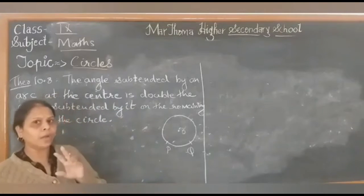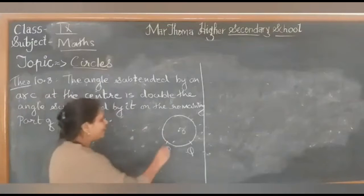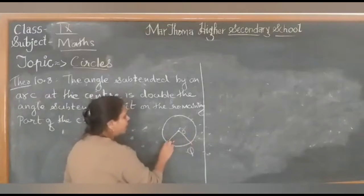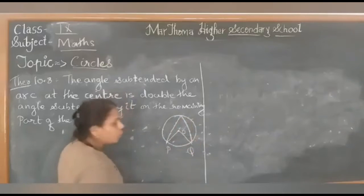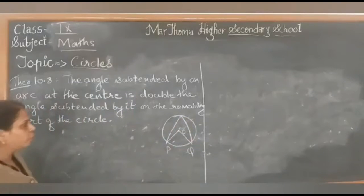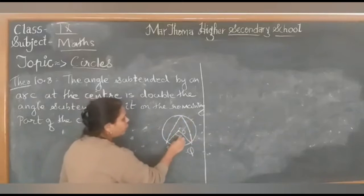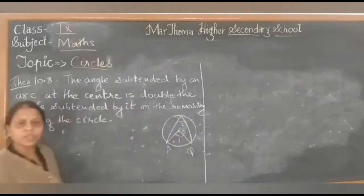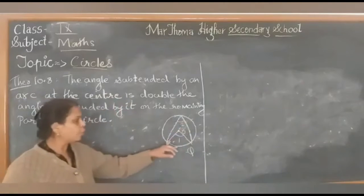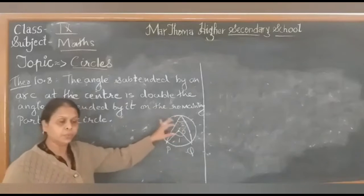Why are we taking arc PQ? I have to draw two angles: one at the center and another at any other part of the circle. Now what is to be proved? If this full angle is angle 1 and this is angle 2, what needs to be proved is that angle 1 is twice angle 2.